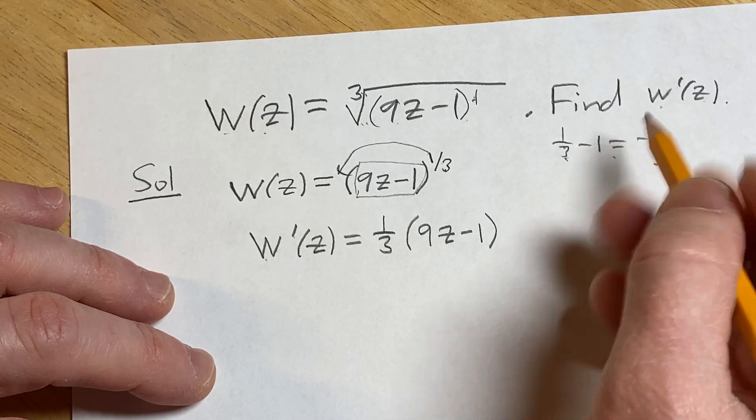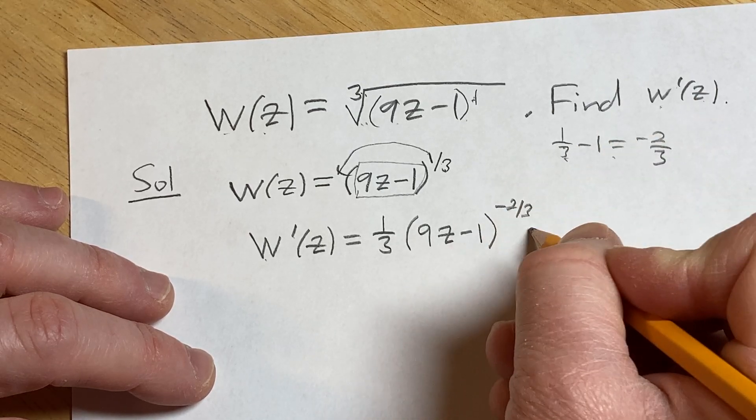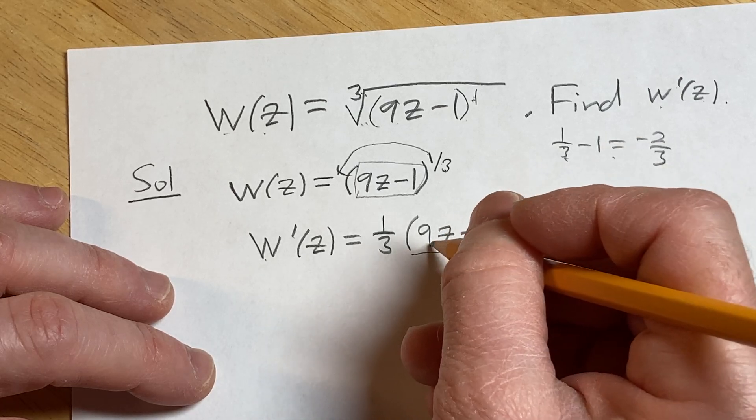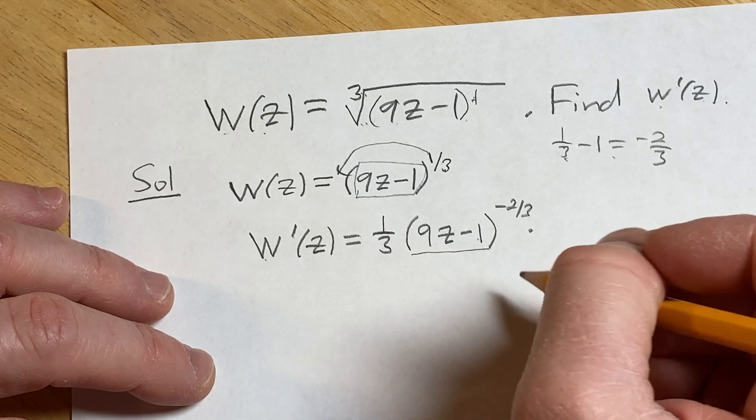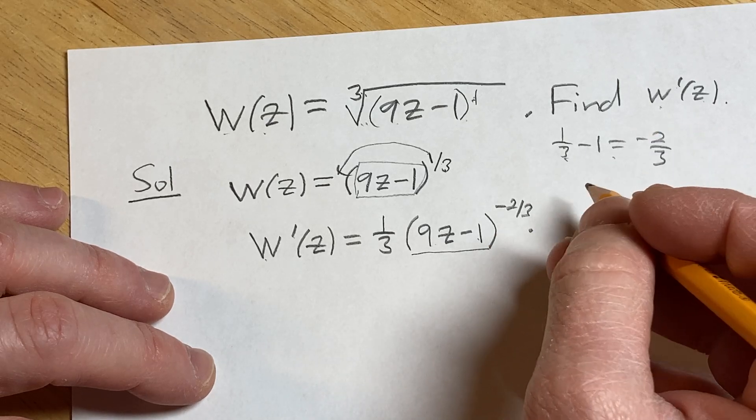It's really 1/3 minus 3/3, times the derivative of the inside function. The inside function is 9z - 1; its derivative is simply 9, since the derivative of -1 is 0.